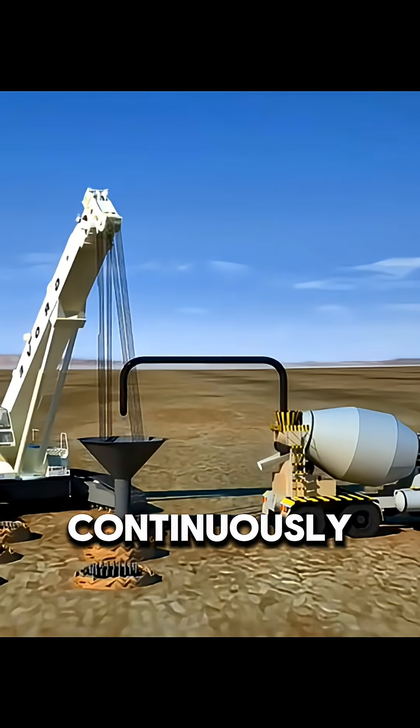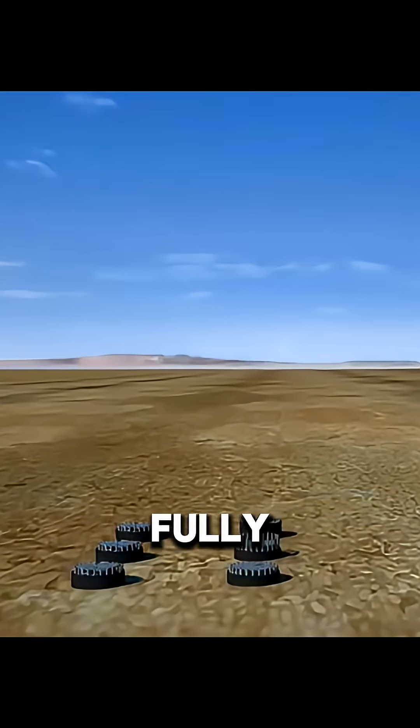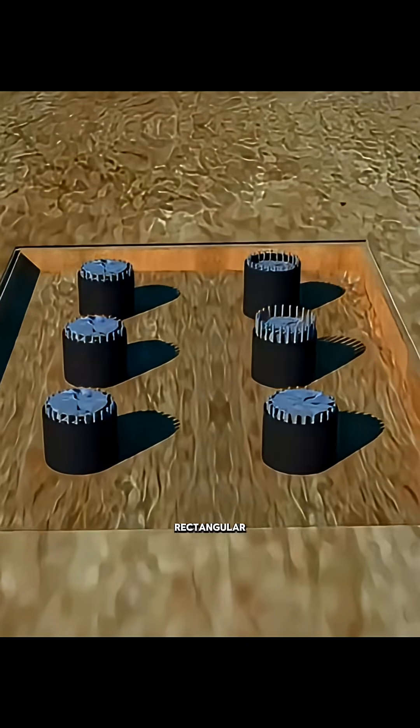Concrete is poured continuously through large funnels, forming a solid bridge foundation. Once the concrete has fully hardened, workers excavate around each pile to create a rectangular pit.